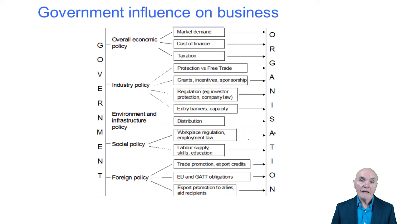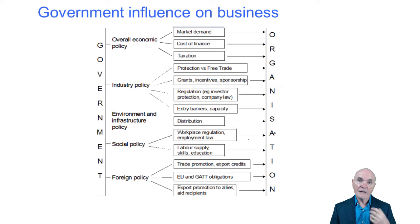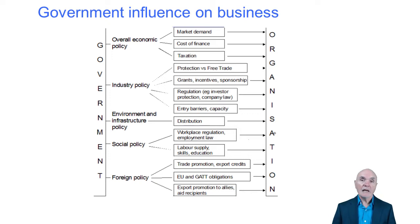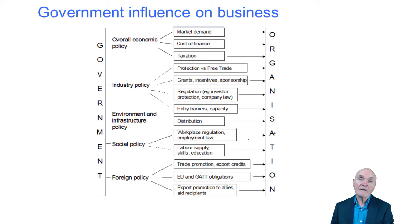Social policy: if the government says once you hire somebody you can never make them redundant or dismiss them no matter how useless they are, companies are going to be very reluctant to hire more people. If there's a more reasonable form of employment protection — where economic necessity could be a reason to make people redundant — then employment rates in general are going to be lower, as people will employ others knowing they can let them go in an emergency.